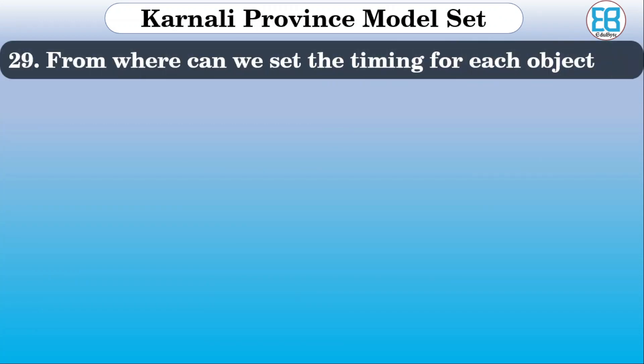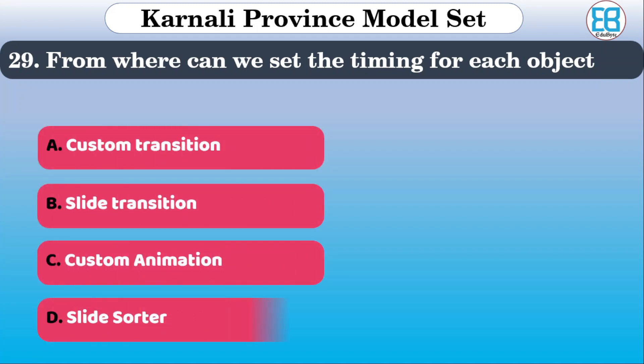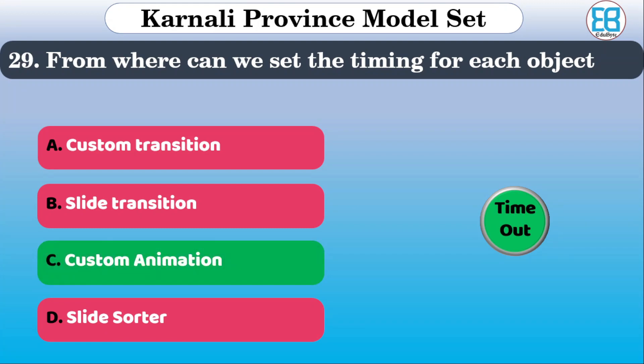From where can we set the timing of each slide in PowerPoint? The options are: custom transition, slide transition, custom animation. The correct option is custom animation.